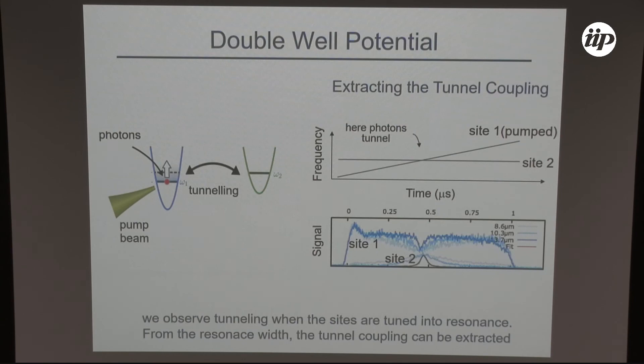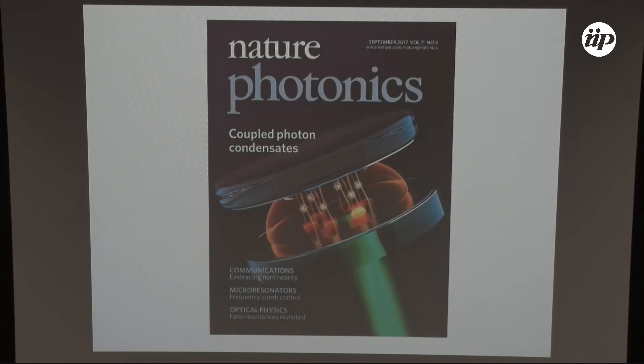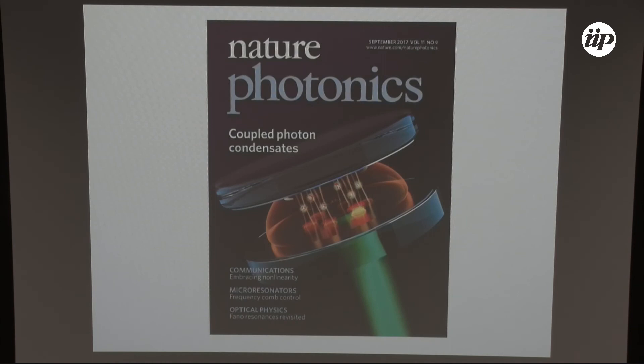Next we studied double-well potentials. If we pump one of the sites, after a certain time we see tunneling into the next site, as soon as that site chirps into resonance with the second one due to the thermo-optic self-interaction. From the width of this tunnel resonance we extract the tunnel coupling. This slide shows the tunnel coupling versus distance, and as expected it decreases exponentially with distance. These photon lattices are shown on the cover image of Nature Photonics from September of last year, where this work was published.